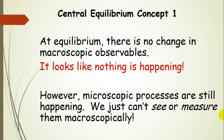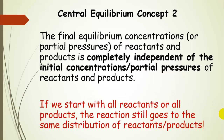One central equilibrium concept is that at equilibrium there is no change in macroscopic observables, so it looks like nothing is happening. However, on the microscopic level — at the individual molecule level — things are still happening; we just can't see or measure them macroscopically. Another central concept is that the final equilibrium concentrations or partial pressures of reactants and products are completely independent of the initial concentrations or partial pressures under a given set of experimental conditions. Whether we start with 100% reactants or 100% products, the equilibrium state will be the same.